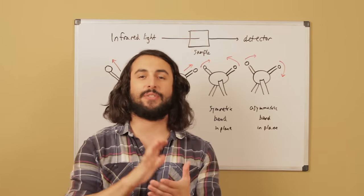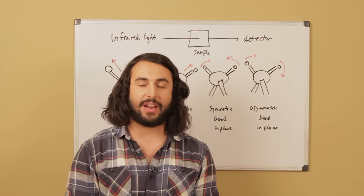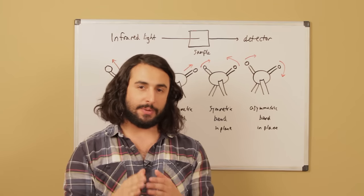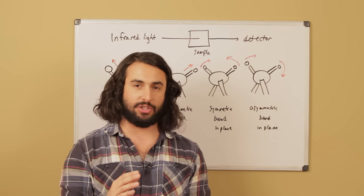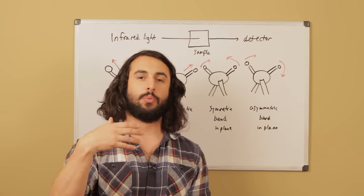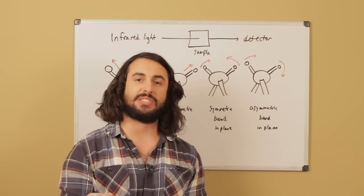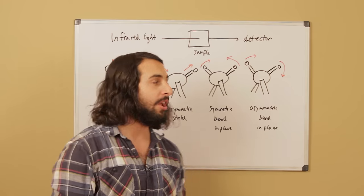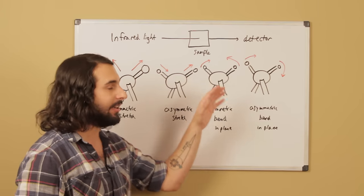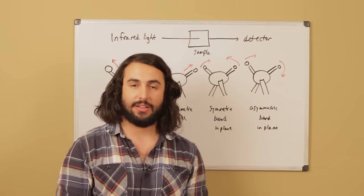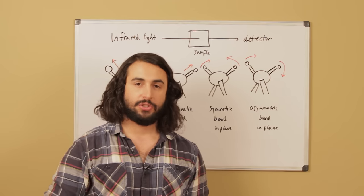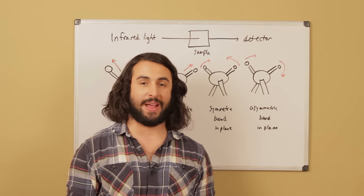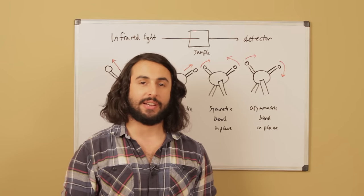The point is we have all of these different kinds of vibrational motions happening in a molecule and they occur at very particular energies. They will occur when a very specific wavelength of infrared light is absorbed, and it will vary depending on the functional group — the identity of the atoms will affect the wavelength of absorption. This is information we're going to use to generate an IR spectrum, so let's look at what that looks like.